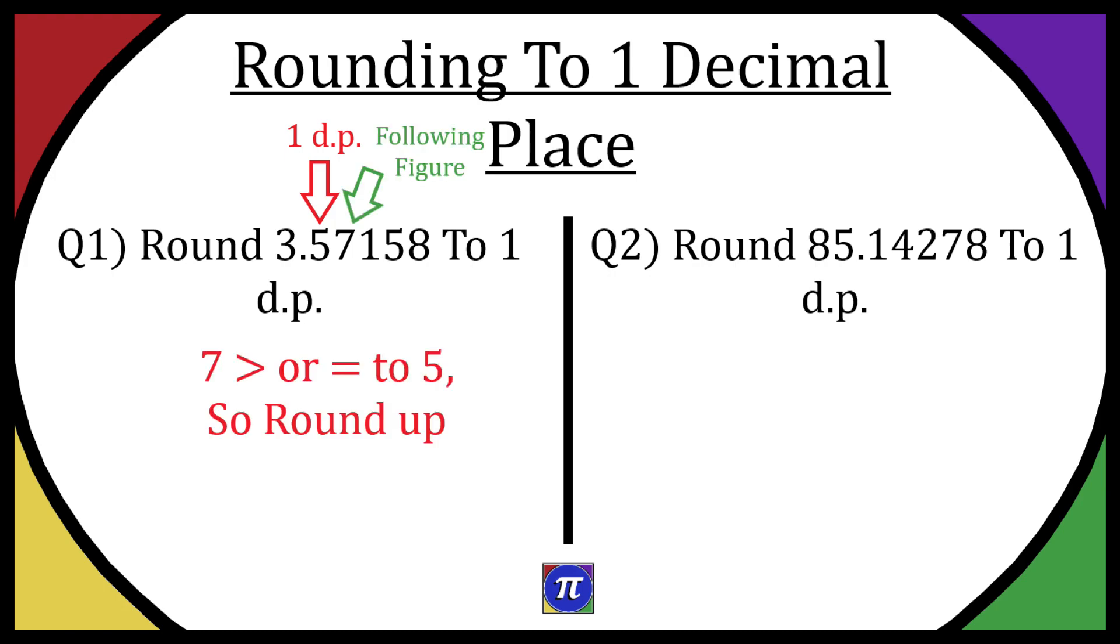Now if this following figure is five or up, you round upwards. If it is less than five, you round downwards. So because we have 3.57, we're going to be rounding up, so that'd be 3.6 as our final answer.